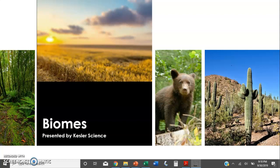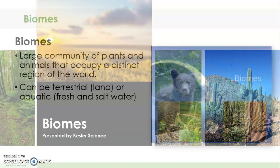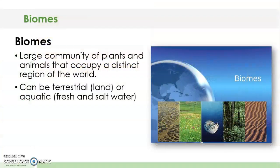Seventh grade, a few days ago we began talking about biomes. We defined biomes as large communities of plants and animals that occupy a distinct region of the world. We also mentioned that they can be made up of many ecosystems that are a part of that region of the world, and that these biomes can either be terrestrial or aquatic.